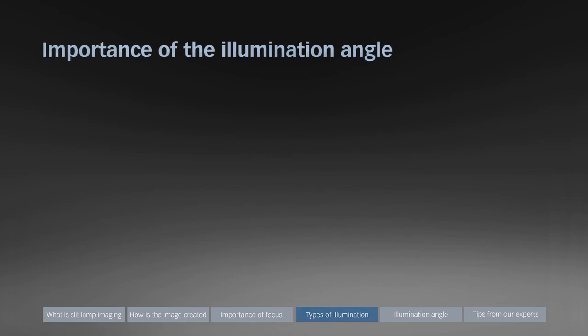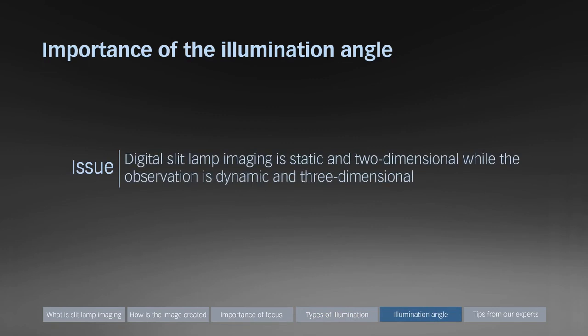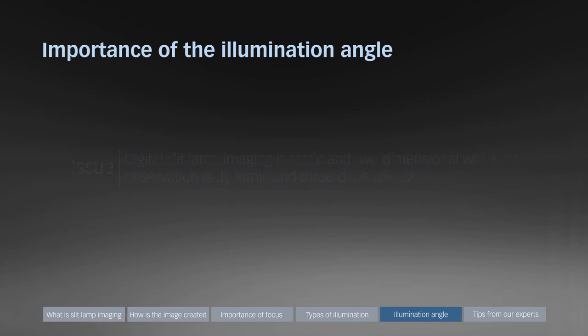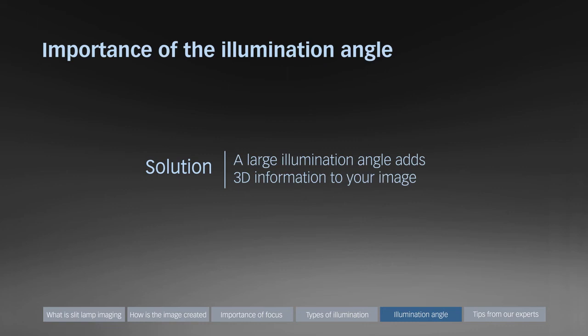This section highlights the importance of the illumination angle. The issue is that digital slit lamp imaging is static and two-dimensional, while the observation is dynamic and three-dimensional. A solution to overcome this issue is to use a large illumination angle. A large illumination angle adds 3D information to your image.